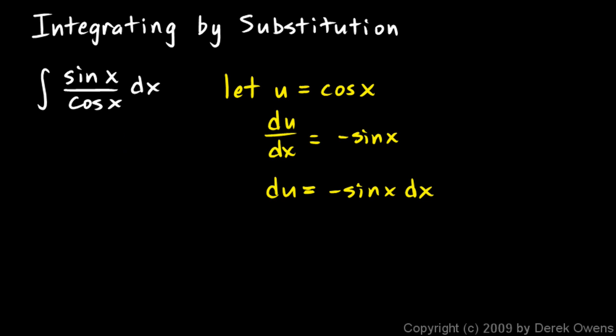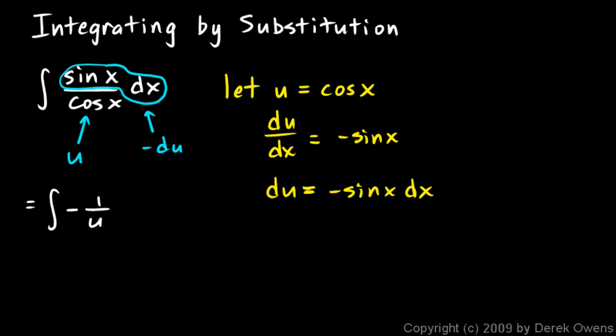Now take that fact and look back at the original integral. Here's u in the denominator, and look what's up top: this sine x dx right up there — that's negative du. So I have u in the denominator and the numerator is negative du. I can rewrite my original integral in terms of u as negative du over u, or negative 1 over u du.